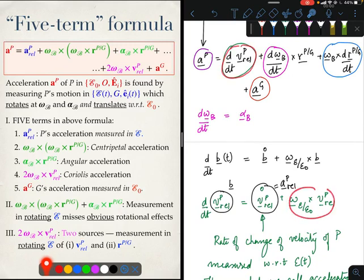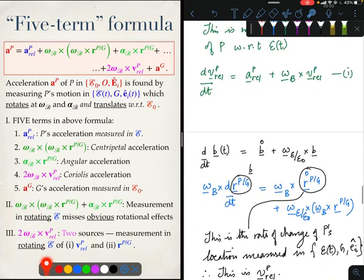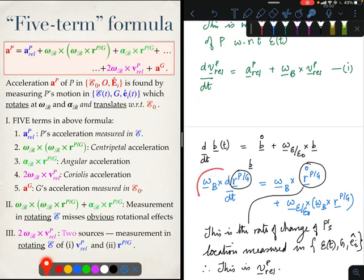That is the first contribution to the Coriolis acceleration. The second contribution to the Coriolis acceleration comes from the third term, which I computed here further down: ω × dr_PG/dt, and here it is again on the right side.